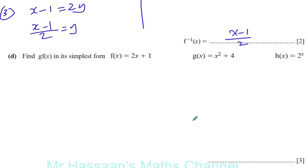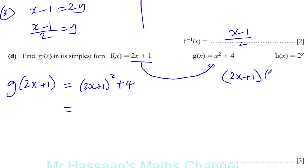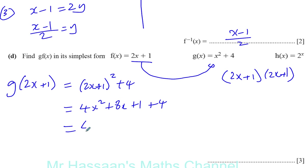Part d says find gf(x) in its simplest form. You put f(x) into g, replacing x with 2x plus 1 in function g. So you get (2x plus 1) squared plus 4. Please don't make the mistake of writing 4x squared plus 1 — this means (2x plus 1) times (2x plus 1). Multiplying out gives 4x squared plus 2x plus 2x plus 1, so 4x squared plus 4x plus 1, plus 4 at the end, giving 4x squared plus 4x plus 5.